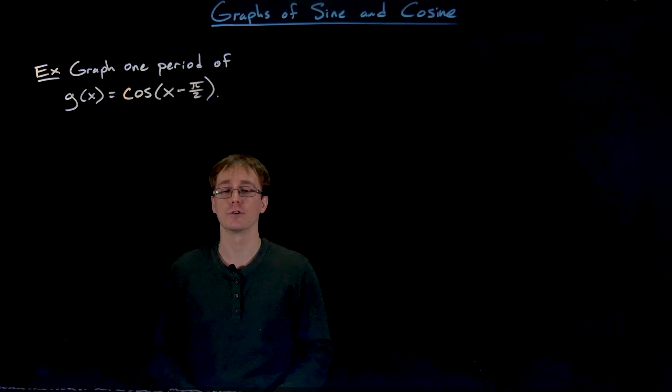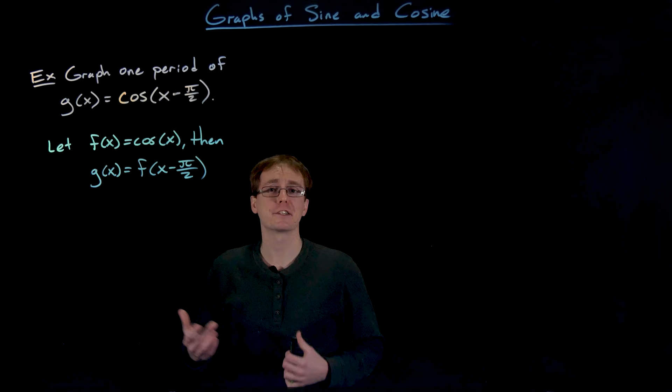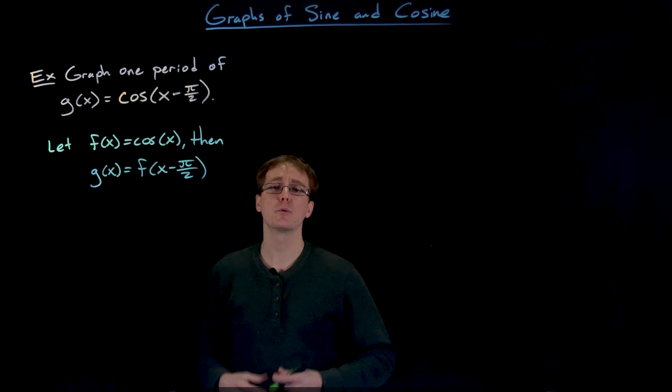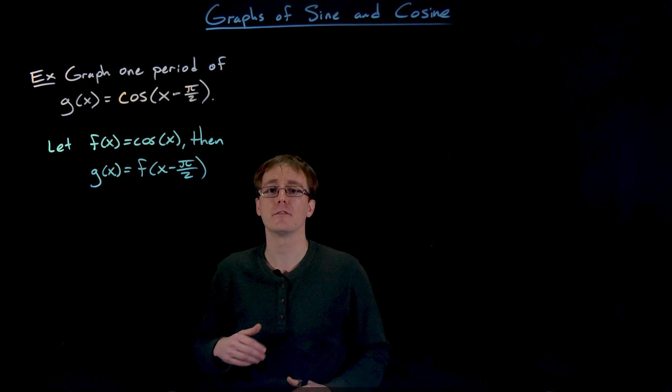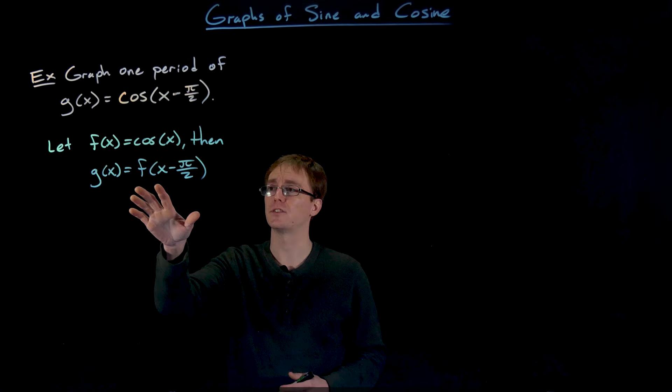We can recognize that our function g(x) = cosine of the quantity x minus π over 2 is just a transformation of our basic cosine function. If we want to express this transformation using function notation, we can let f(x) equal cosine of x, and that allows us to write g(x) in terms of f(x) as g(x) equals f of the quantity x minus π over 2.